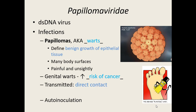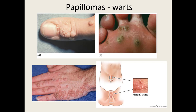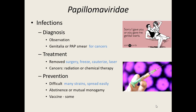Warts can show up anywhere, can be unsightly and painful. Diagnosis is usually just based on observation — you can see them easily. However, some genital warts might require a pap smear because they want to know if any particular cancer might develop. There are lots of strains of this virus, and some strains are more likely to cause cancer. Treatment: they can remove warts surgically, freeze them off, cauterize them, laser them off, or use various chemicals. If cancer develops from the virus, radiation or chemotherapy may be needed.